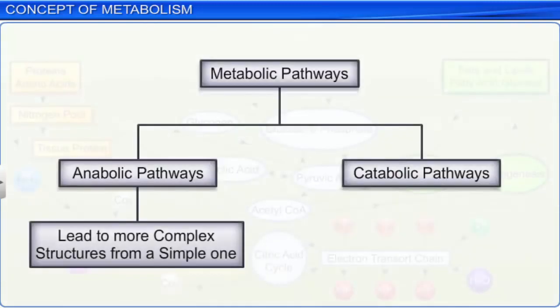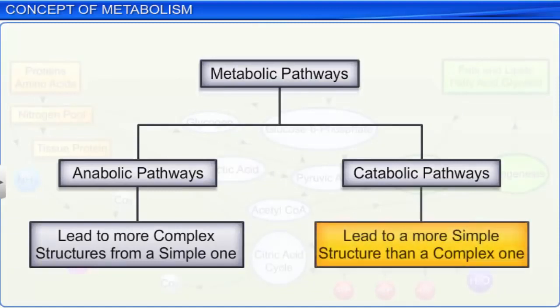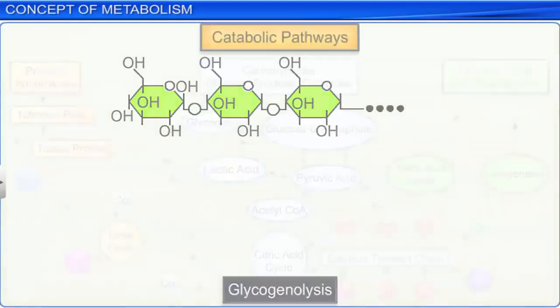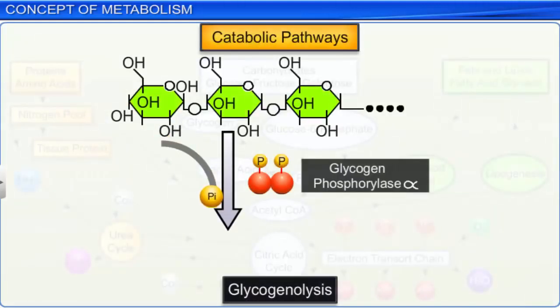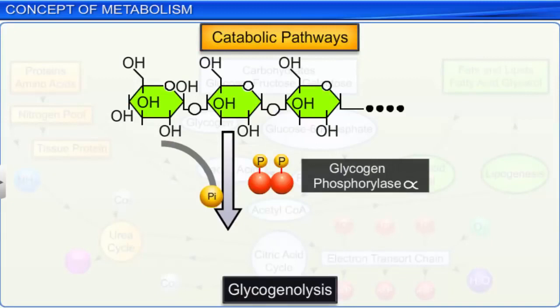On the other hand, catabolic pathways lead to a simple structure from a complex one. They involve degradation and also lead to a release of energy. For example, the process of glycogenolysis, which leads to the breakdown of glycogen to glucose.